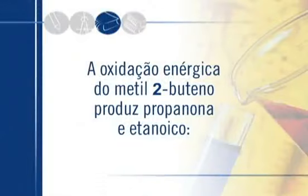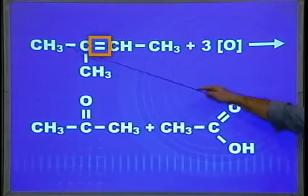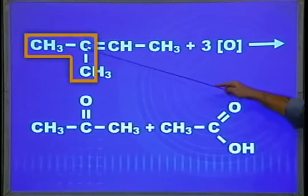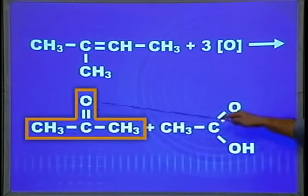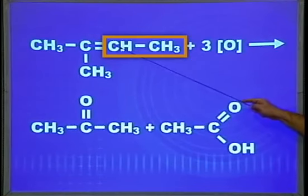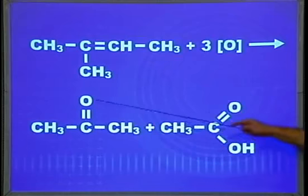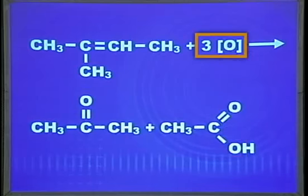A oxidação enérgica do metil-2-buteno produz propanona e etanoico. A ruptura acontece na dupla ligação. Desse lado há uma ramificação com três carbonos — vai dar cetona. Entrando aqui o oxigênio do agente oxidante forma-se a propanona. Do outro lado, CH3CH sem ramificação — vai dar ácido carboxílico, o etanoico. Contabilizando os oxigênios: um para fazer a propanona e dois para fazer o etanoico, gastando três oxigênios no total.